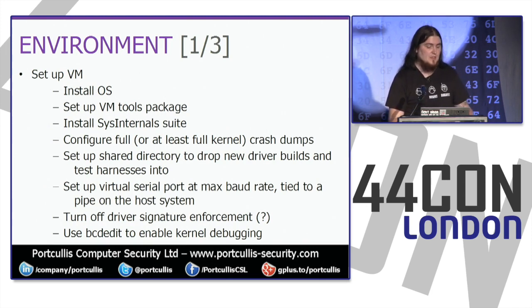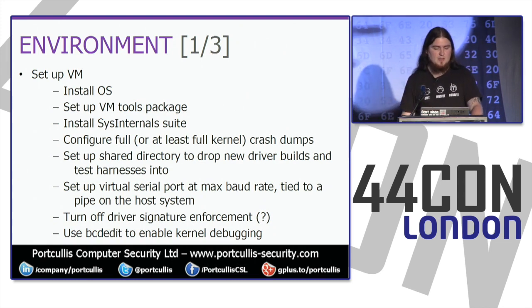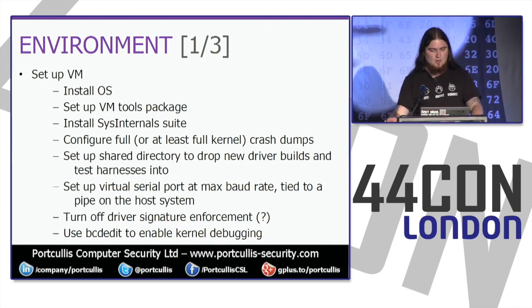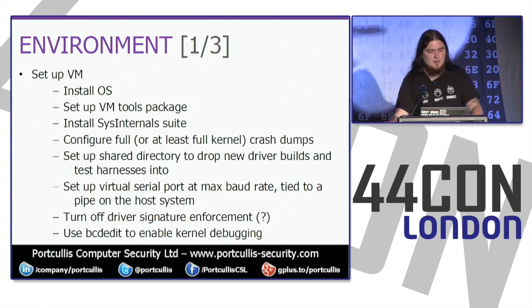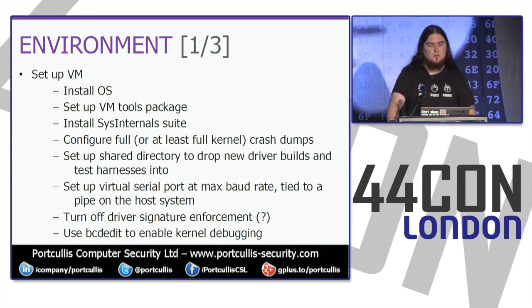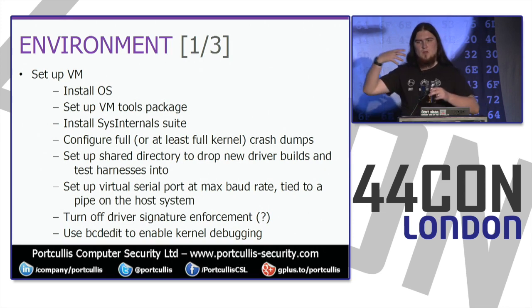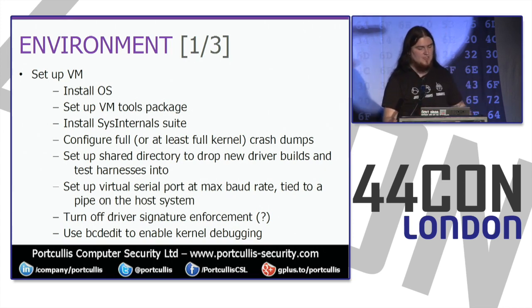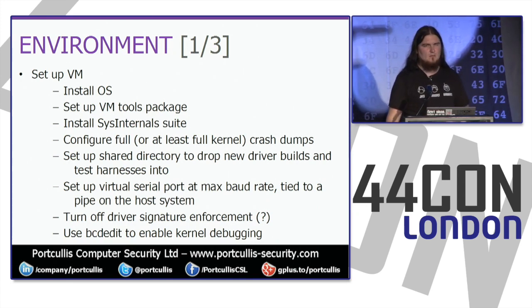To set up an environment: set up a VM, install the OS, drop your VM tools package in, install Sysinternals Suite, and configure it to use full kernel crash dumps. Configure a shared folder to drop new drivers in. Set up a virtual serial port at maximum baud rate tied to a named pipe on the host side. That way WinDbg can tie onto a named pipe which goes into a serial port in the VM — so you can do kernel debugging on one system without a physical serial port.